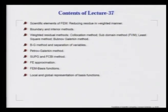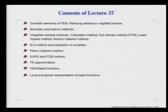On lecture 37, we seriously start our discussion on the scientific elements of FEM. We are not interested in the engineering application of FEM. There are many specialized courses for that, but we try to find out how the accuracy aspect of FEM works in this lecture and the following lectures. We notice that the scientific element of FEM is an effort to reduce the residue — not exactly, but in a weighted manner — and we talk about various variations in terms of boundary and interior methods.